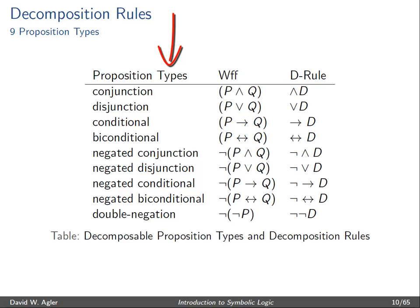And lastly, there is the double negated well-formed formula. In the far right column, there is an abbreviation for the decomposition rule that would decompose the corresponding formula. So a conjunction, a formula of P wedge Q, will be decomposed using the decomposition rule wedge D, which is an abbreviation for conjunction decomposition.